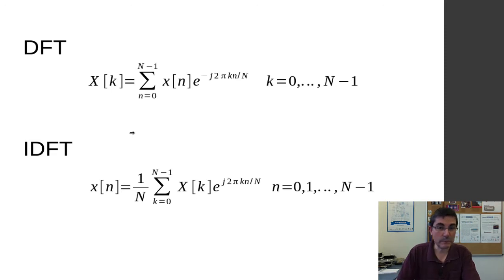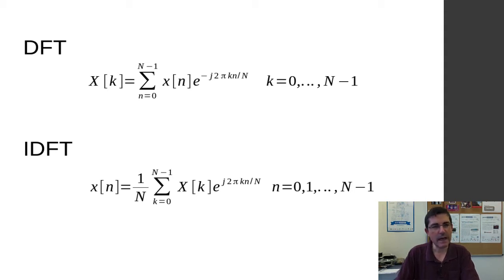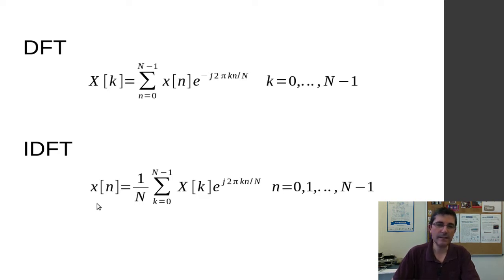In the DFT we'll be computing all the X values — all the spectral values present in a given signal x — so we'll be iterating over all k and computing the sum. And in the inverse, we'll be iterating over all time, over all n, and for each n we'll be computing this sum.